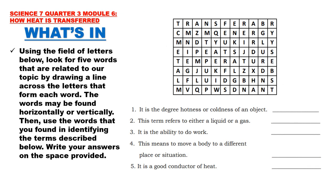What's In. Using the field of letters below, look for 5 words that are related to our topic by drawing a line across the letters that form each word. The words may be found horizontally or vertically. Then, use the words that you found in identifying the terms described below. Write your answers on the space provided.